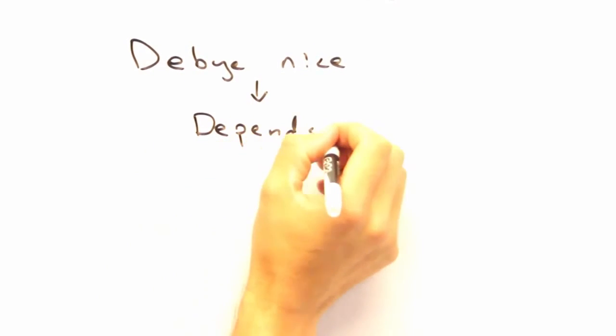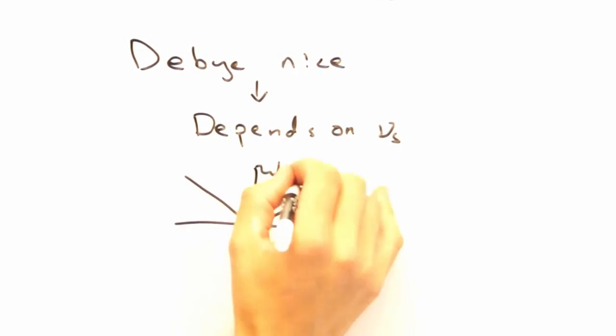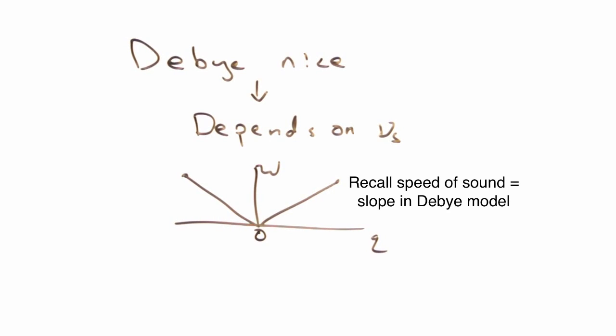So other than the right temperature limits, a pro for the Debye model is the fact that we really only have one free parameter, and that is the slope of dispersion, or the speed of the wave, which we can determine through experiments.